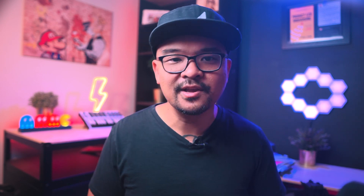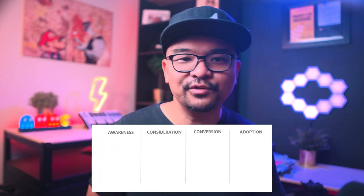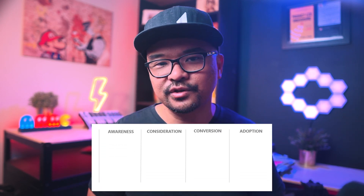Seeing as how a customer's journey from discovery to power usage might contain dozens of points, it's best to divide the horizontal axis into multiple phases. Commonly, user journey maps for products are segmented into the following phases: awareness, consideration, conversion, and adoption. Visually, the first stage of building a user journey map template might look something like this.